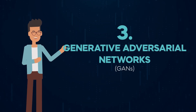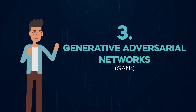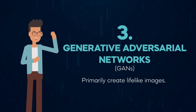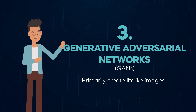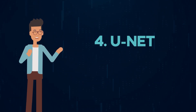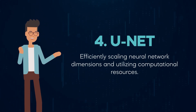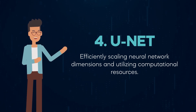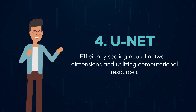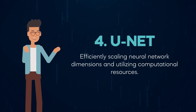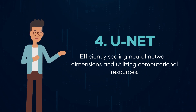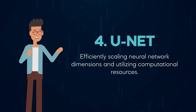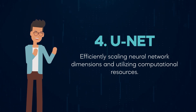Third, generative adversarial networks — GANs — primarily create lifelike images. Lastly, specialized networks like UNet excel in medical image segmentation, while EfficientNet optimizes performance by efficiently scaling neural network dimensions and utilizing computational resources.